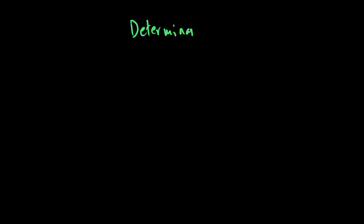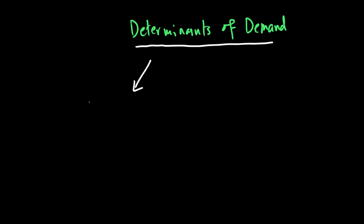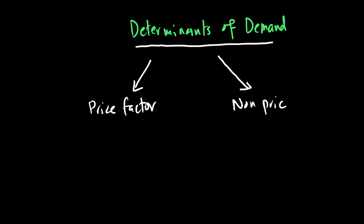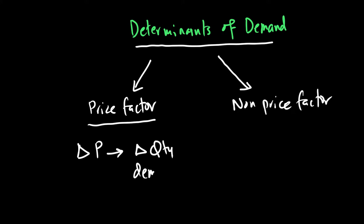Let's talk about what we call the factors that can affect demand — in other words, the determinants of demand. We distinguish between the price factor, which we've been discussing, and the non-price factor. The price factor is when the price of a good changes — that change in price leads to a change in quantity demanded, which is a movement along the demand curve. But there could also be a non-price factor playing a role.